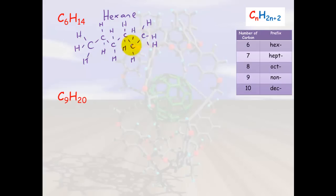Counting the hydrogens on hexane, they add up to 14 total.